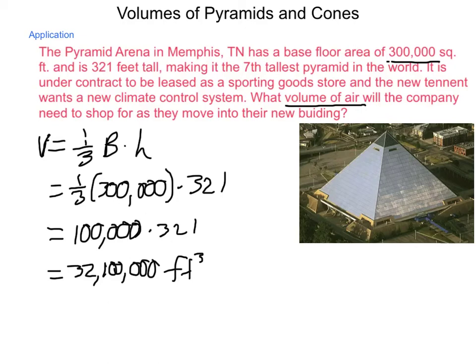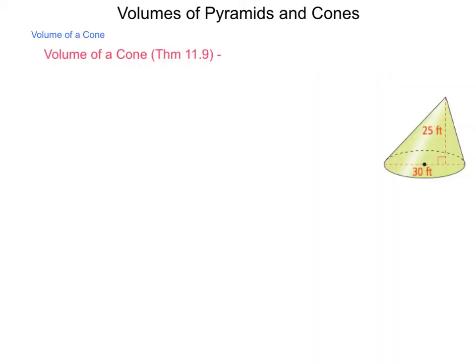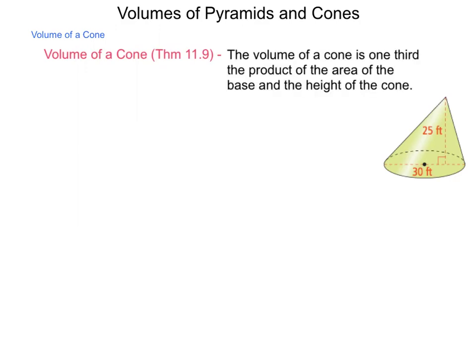What do we do about cones? Let's take a look at that theorem. The volume of a cone, theorem 11.9, tells us that the volume of a cone is one-third the product of the area of the base and the height of the cone.